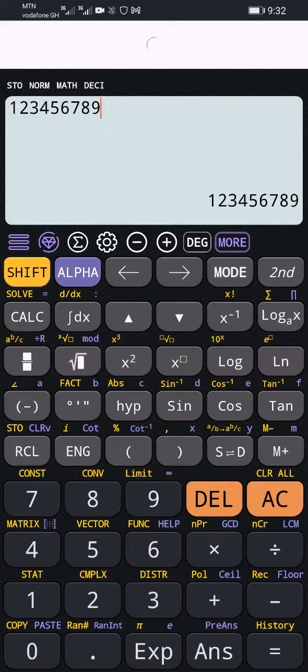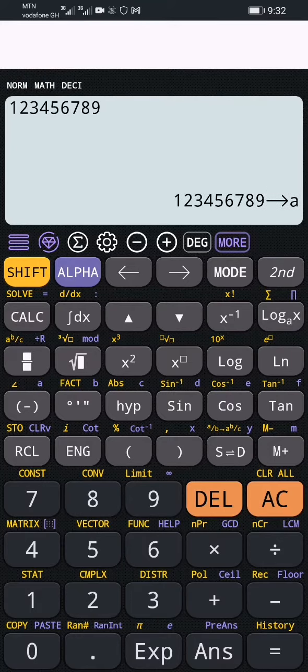...is to look for where to store it. So I have my small a, small b, small c, small d here. I prefer storing at 'a' here. Now to get the 'a', you need to press ALPHA, so I press ALPHA, then I'll press 'a'. I have 123456789 with an arrow.